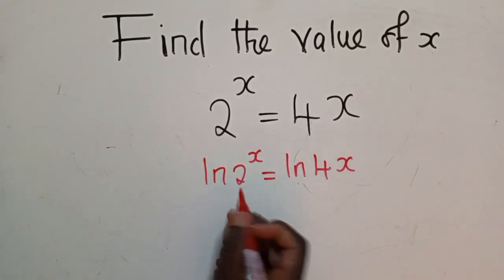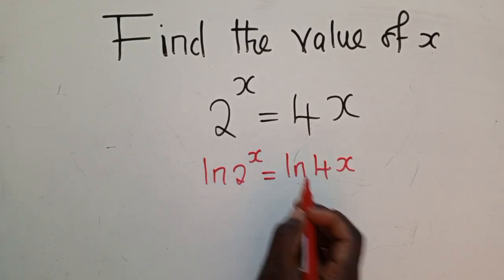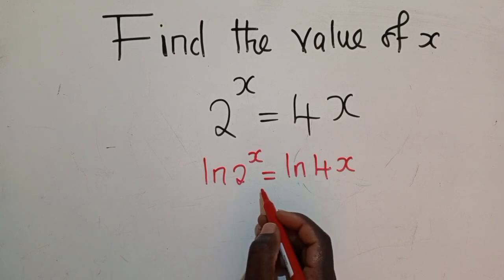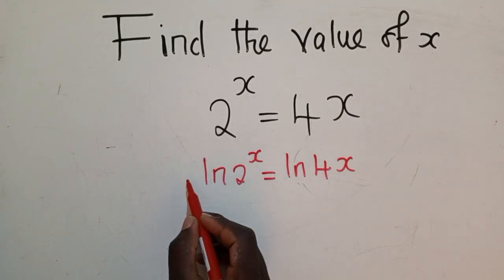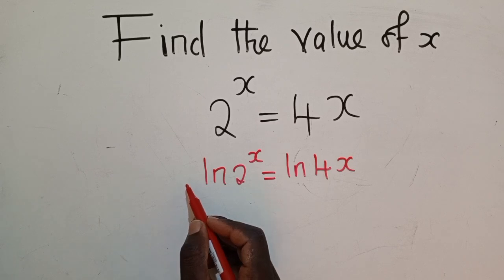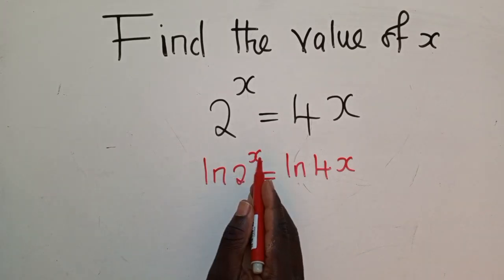So once you write like this, we know that this power will come this side, following the laws of natural logs. So I don't want to do that. I'll leave it the way it is.